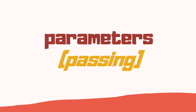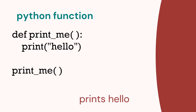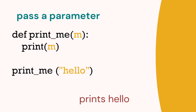What about passing parameters? Let's look at our code again. Now we've got hello in the brackets when we call the function, and that passes to the function which then prints it. So we're passing hello, which is a parameter, to the function. You can see we pass hello to the variable m, which is in the brackets after the function name, and that's then printed.